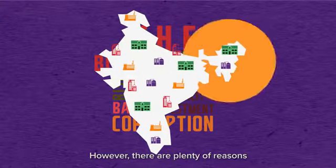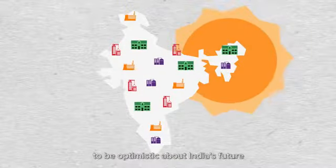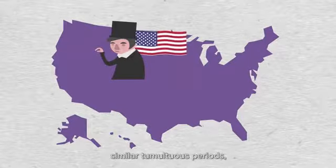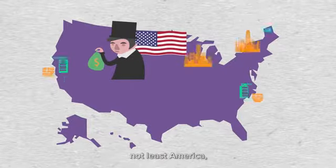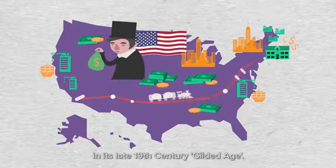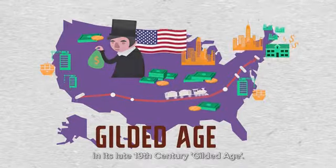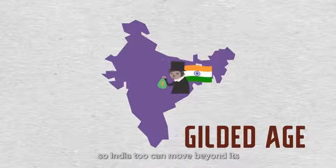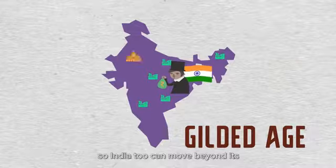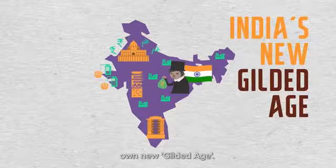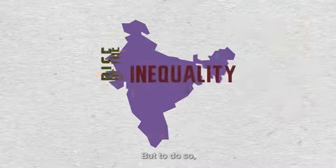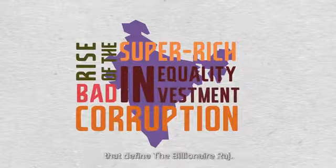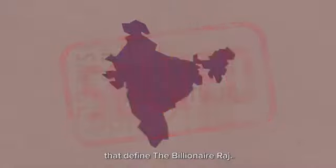However, there are plenty of reasons to be optimistic about India's future. Many other countries have gone through similar tumultuous periods — not least America in its late 19th century Gilded Age. As America did before, so India too can move beyond its own new gilded age, but to do so it needs first to fix the three problems that define the billionaire Raj.